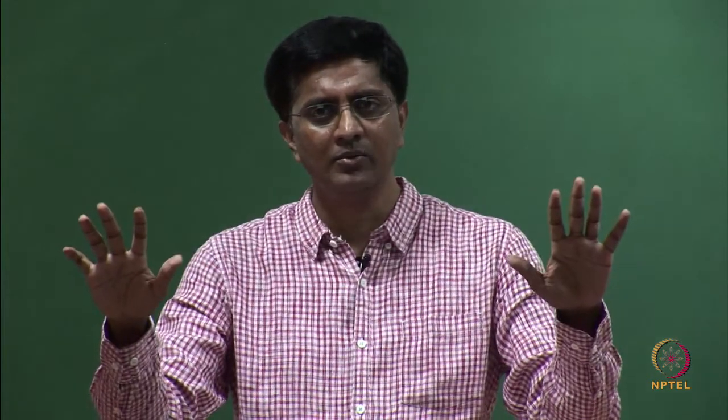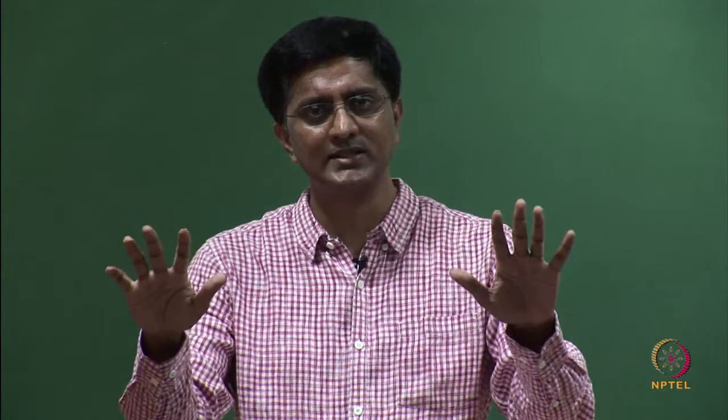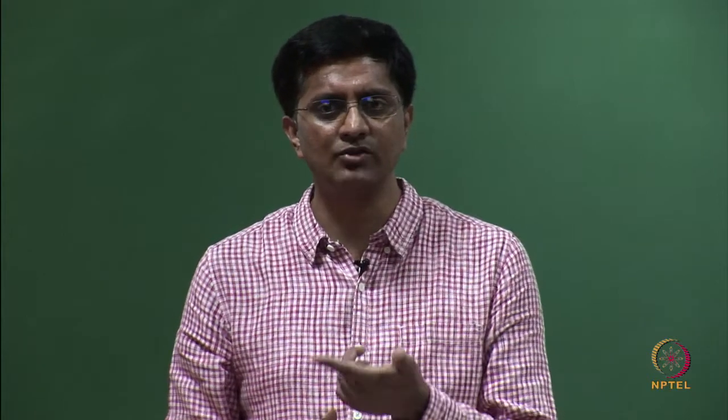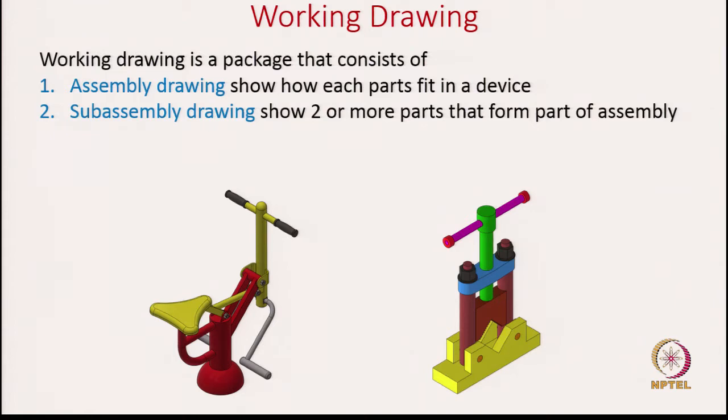Similarly, if you look at the steering wheel, you might see there are several buttons and other options — this is also a subassembly. So essentially, when you want to convey the design of a car, you will first start with an assembly showing the complete car, and then say the total car is composed of subassemblies like the engine, wheel, steering wheel, seat, or gearbox.